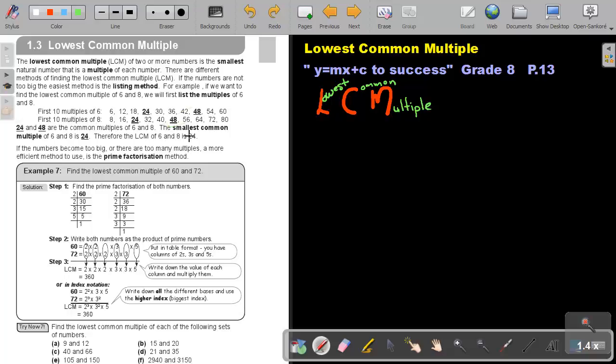Now, if the numbers become too big or there are too many multiples, a more efficient method to use is the prime factorization method. Let's look at example 7. Find the lowest common multiple of 60 and 72. So break it up into prime factors. Write down the product of the prime factors.